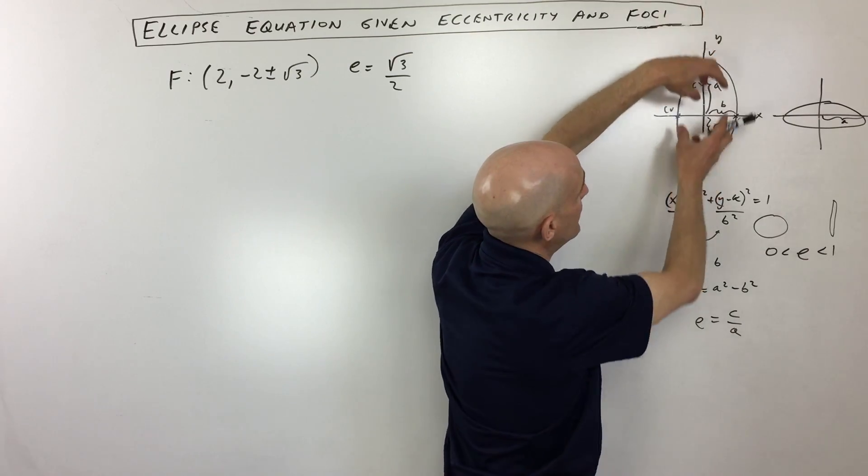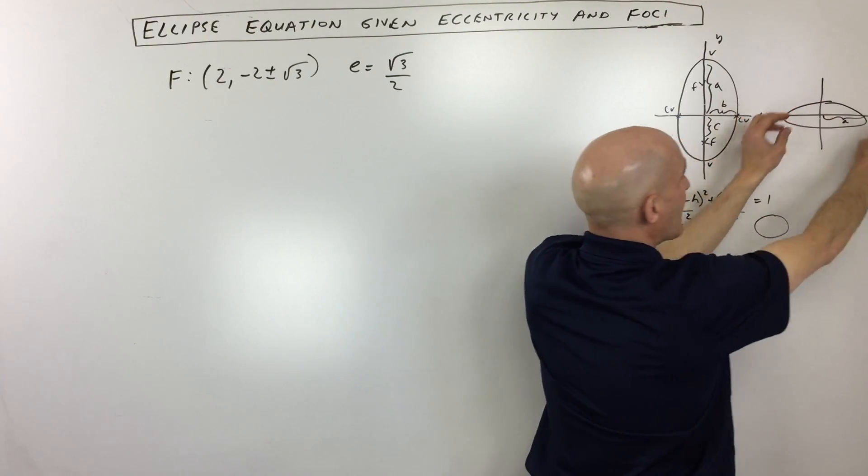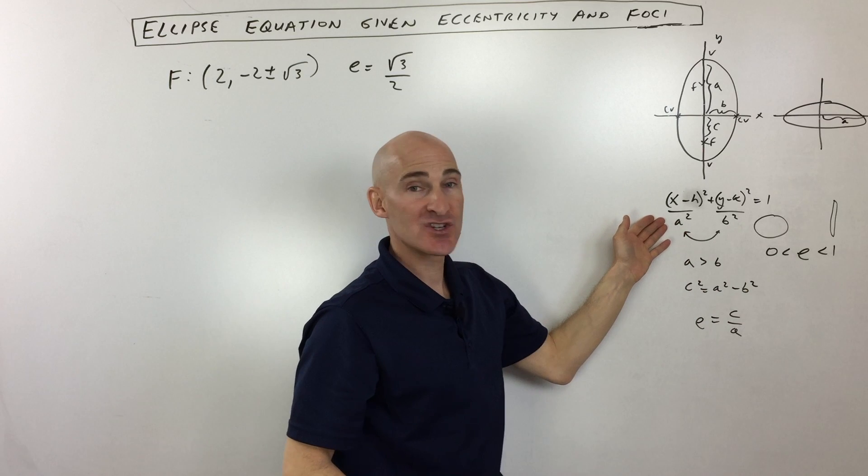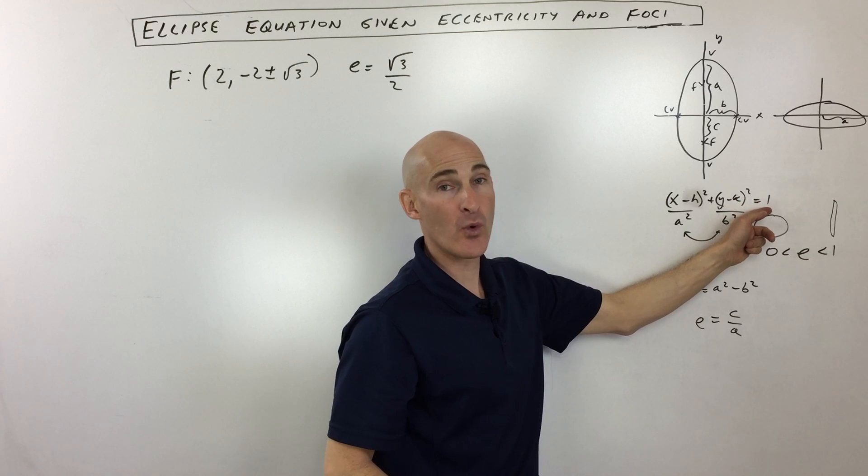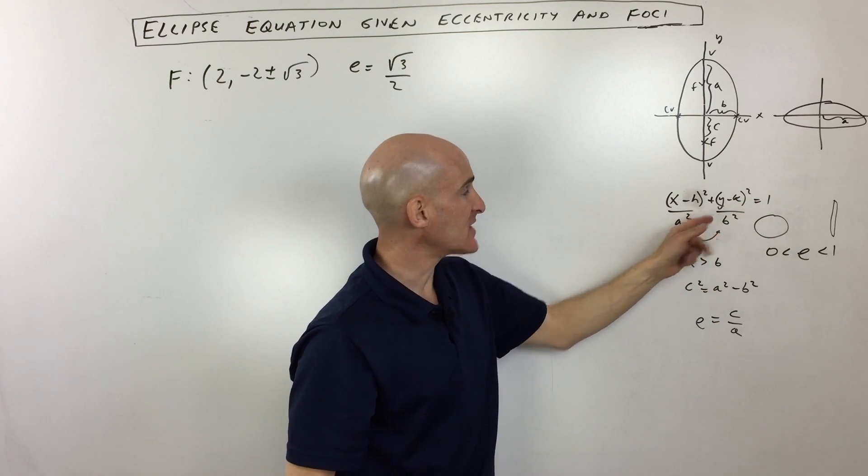Now it can be more elongated in the Y direction or in the X direction, but the basic equation is like this: X minus H squared over A squared plus Y minus K squared over B squared is equal to 1. So they always equal 1, and you're always adding.